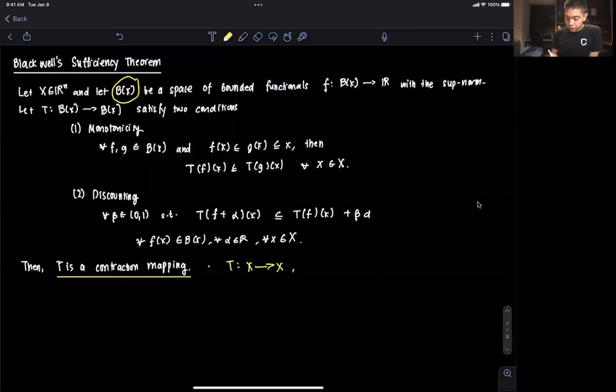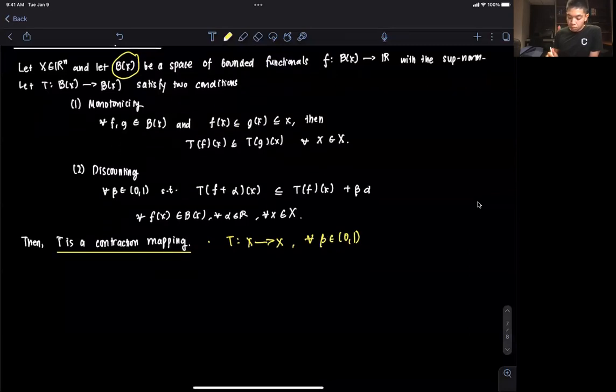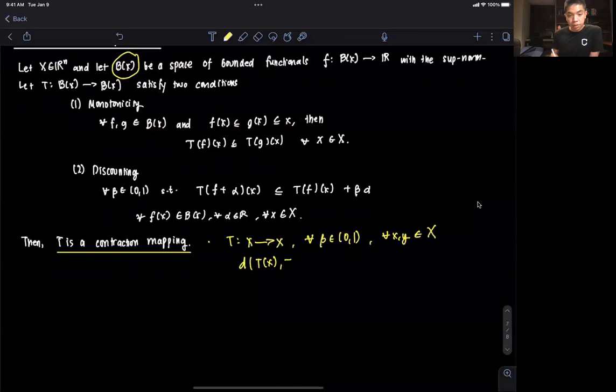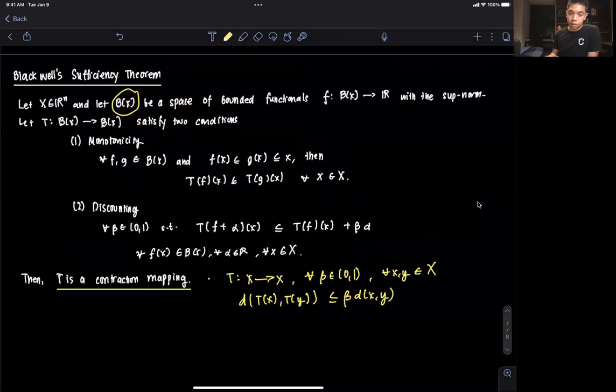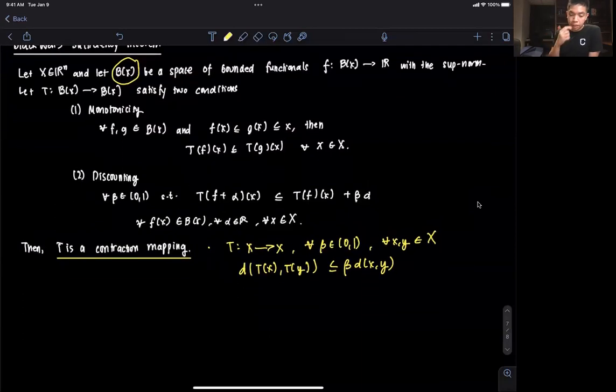It means that T is some operator that operates from some space X to X. Then for all beta between 0 and 1, it must hold that the distance between two points, for all x and y in X, the images of those two points should be less than or equal to beta times the distance of these two points. That's our definition of a contraction mapping and we want to prove that in the end.